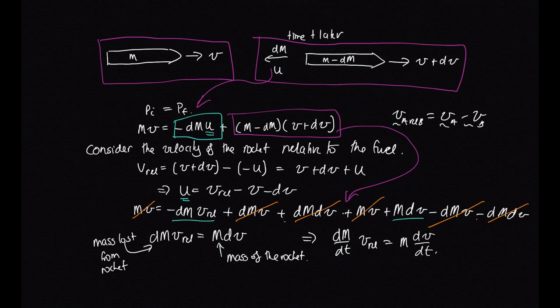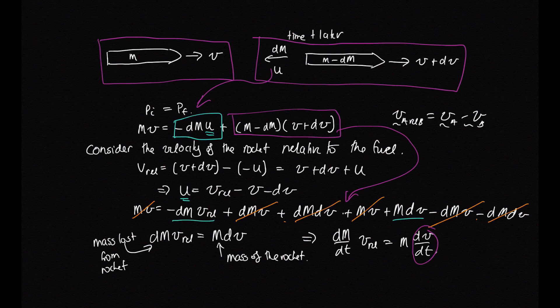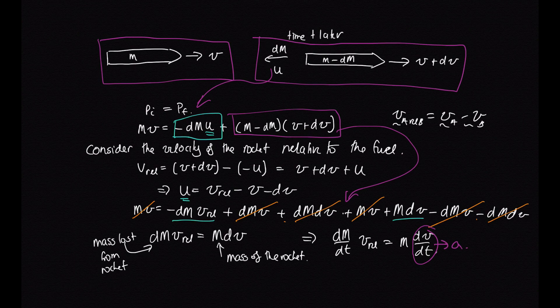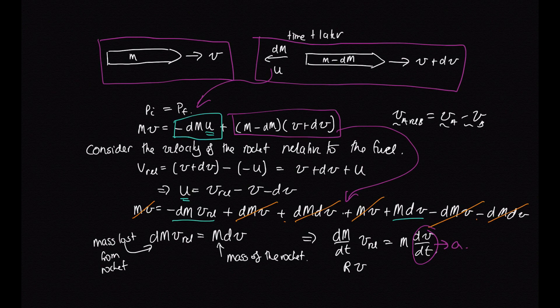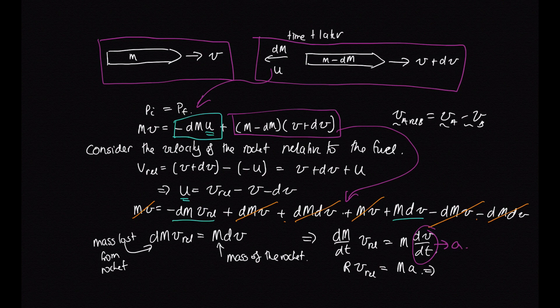And why this is a nice rocket equation is, well, we know that dv/dt, that is the acceleration. dm/dt, that's the mass lost from the rocket. So we can actually give that a symbol r, which is the rate at which it's losing mass. So we've got r times the relative velocity between the rocket and the fuel is equal to ma. So this is our rocket equation.